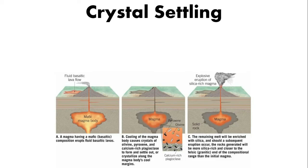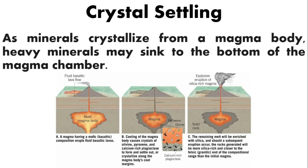We also have crystal settling. As minerals crystallize from a magma body, heavy minerals may sink to the bottom of the magma chamber. Heavy minerals such as chromite, olivine, and ilmenite contain high concentrations of chromium, titanium, and platinum. These elements thus attain higher concentrations in the layers that form on the bottom of the magma chamber.